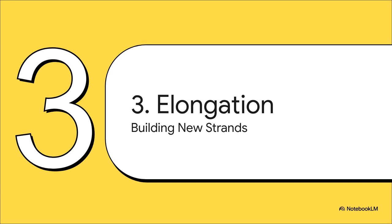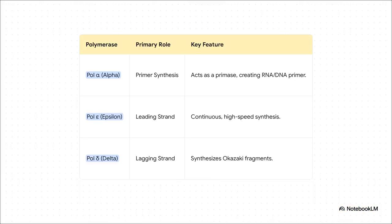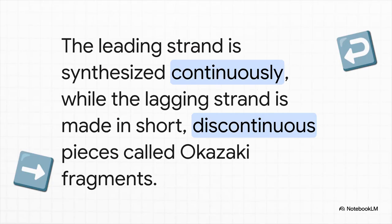The origins have fired and the replication forks are moving. Now we're in the main event: elongation. This is where the real workhorse enzymes, the DNA polymerases, take center stage to build the new strands of DNA. There is a clear division of labor among the polymerases. Polymerase alpha acts as the primase — it lays down a short RNA primer to get things started. From there, polymerase epsilon takes over the leading strand for smooth, continuous synthesis. Meanwhile, polymerase delta is the specialist for the lagging strand. This separation of duties exists because of DNA's anti-parallel structure. Polymerases can only build in one direction, 5' to 3'. This means one strand, the leading strand, can be synthesized in one long continuous piece. But the lagging strand has to be made backwards, in short stitched-together segments called Okazaki fragments.